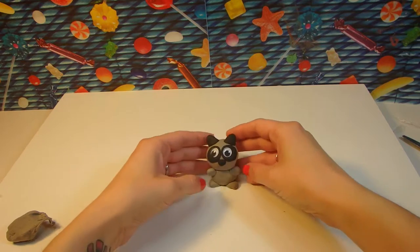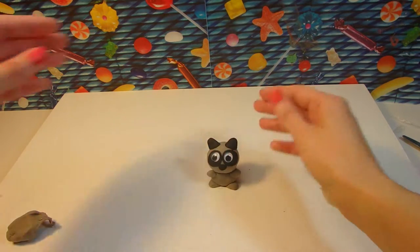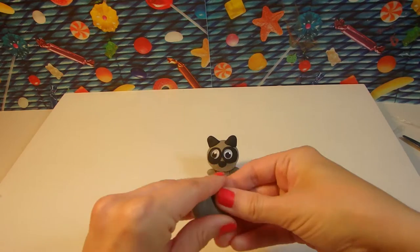And of course, the most important thing for a raccoon is his stripy, bushy tail.